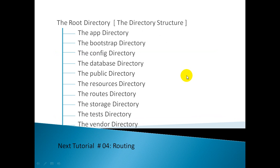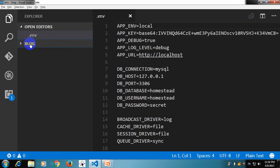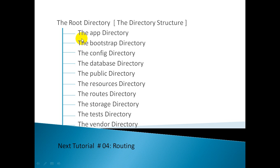If we go to the root directory, we can see this is the root directory block, and under this block directory we have some other subfolders. The first subfolder is the app directory. I am going to explain a bit about the functionality of each directory. The app directory contains the core code of the application.